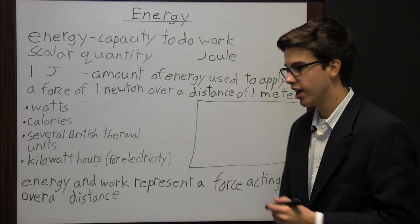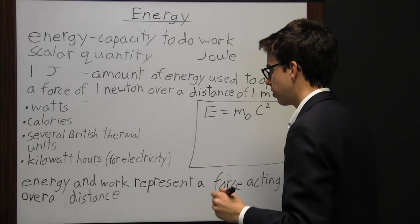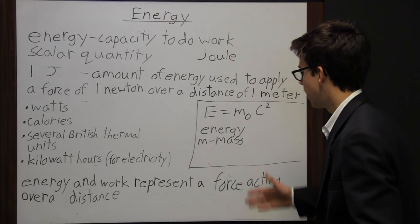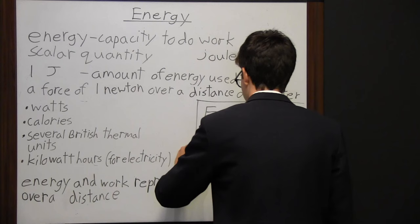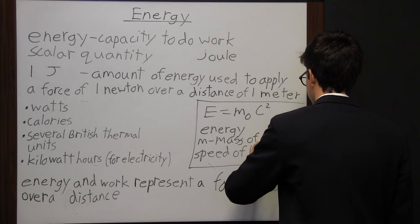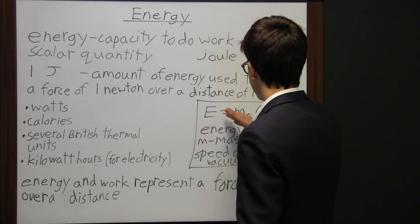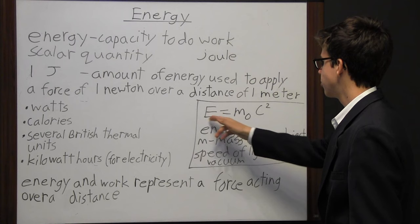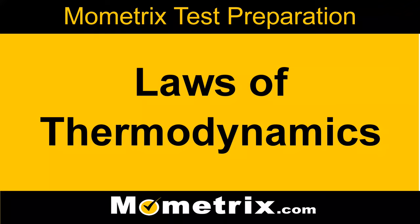The relationship between energy and mass is given by E = M₀c², where E is energy, M₀ is the mass of the object, and c² is the speed of light in a vacuum squared — a constant. This equation allows you to relate energy and mass to each other.